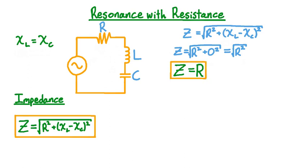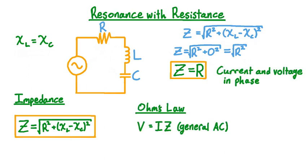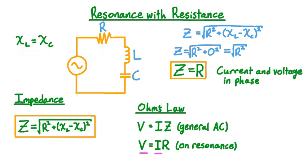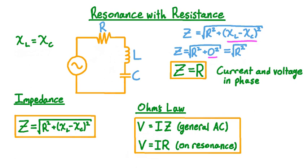This tells us several important things. First, since the total reactive contribution to impedance is zero on resonance, there is no phase shift introduced between the current and the EMF. Secondly, Ohm's law tells us that voltage equals current times impedance. On resonance, this becomes voltage equals current times resistance — Ohm's law for purely resistive AC circuits. Furthermore, since total reactance squared is always positive unless it's zero, the impedance is minimized on resonance. By Ohm's law, minimum impedance implies maximum peak current.